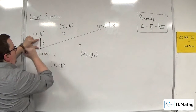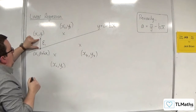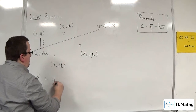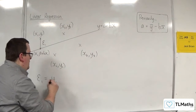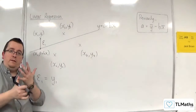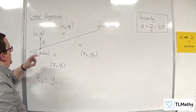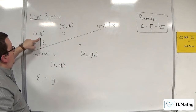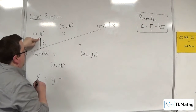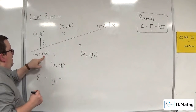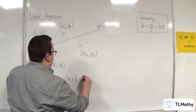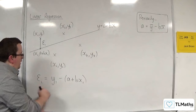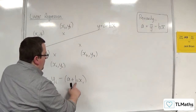That difference we refer to as the residual, and we label it using the Greek letter epsilon. So this would be epsilon 1. And epsilon 1 is calculated by finding y1 — the y value of the coordinate that has been collected — then taking away the predicted y value, which is a plus bx1. So in general, we can write epsilon i equals yi take away a plus b times xi.